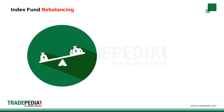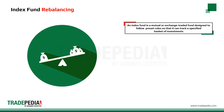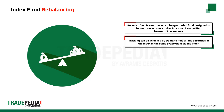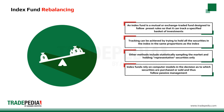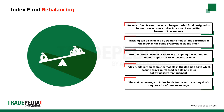Index fund rebalancing — to explain this strategy, we first have to explain what is an index fund. An index fund, also known as an index tracker fund, is a mutual fund or exchange traded fund designed to follow certain preset rules so that it can track a specific basket of underlying investments. Tracking can be achieved by trying to hold all the securities in the index in the same proportions as the index, or by statistically sampling the market and holding representative securities only. Many index funds rely on computer models with little or no human input in the decision as to which securities are purchased or sold, and are thus subject to a form of passive management. The main advantage of index funds for investors is they don't require a lot of time to manage, as investors don't have to spend time analyzing various stocks or stock portfolios.